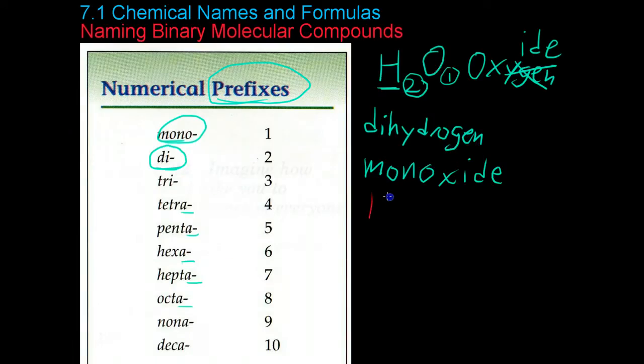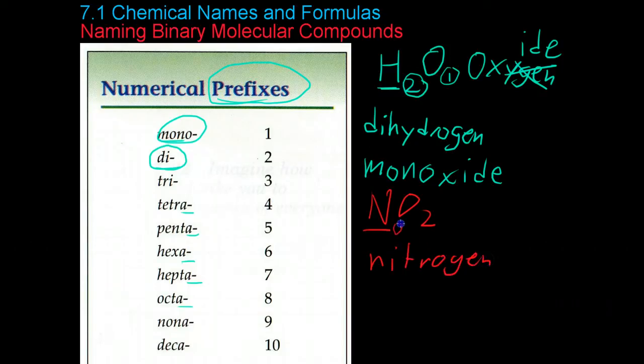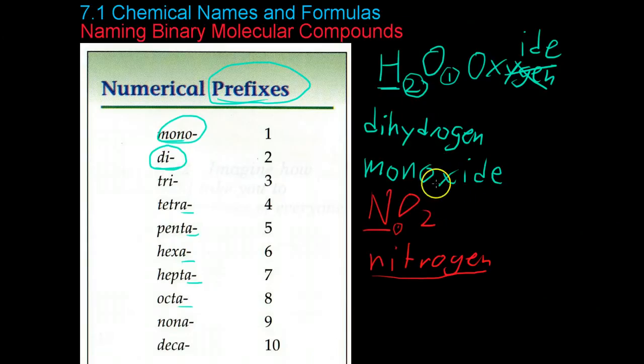Again, you would take the element from the earlier group, in this case nitrogen, and you would write it out. Nitrogen. But because there's only one and it is the first element in this compound, you don't use the prefix mono. You just leave it alone.